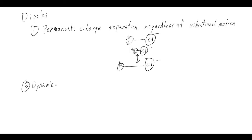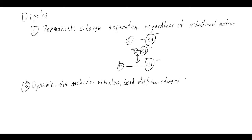The dynamic dipole is the other type - you can think of it as sort of the first derivative of the permanent dipole, not mathematically, but there's a time variance to it. As the molecule vibrates, the bond distance changes, and therefore the electron density overlap changes.